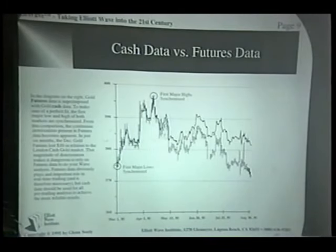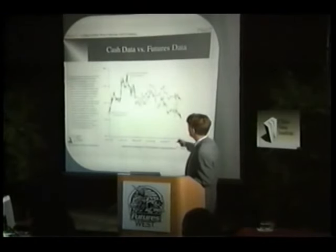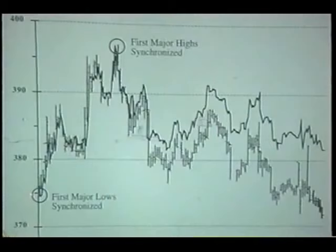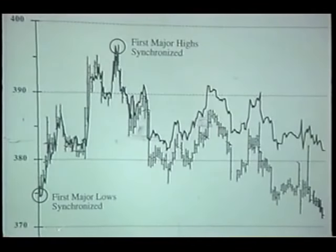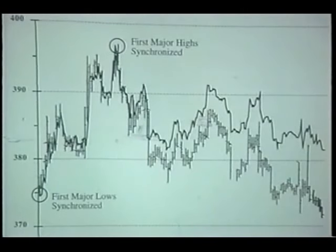Right here in this real-time chart of the gold market, I superimpose the gold daily cash data and the futures data so that I connected them — I forced the two major highs and lows in March and April to coincide with one another, so that you could clearly see over time how the futures price decayed.